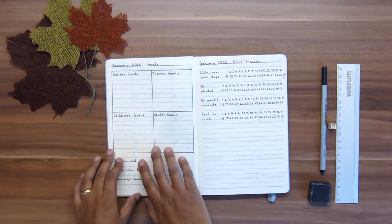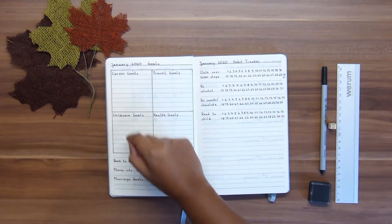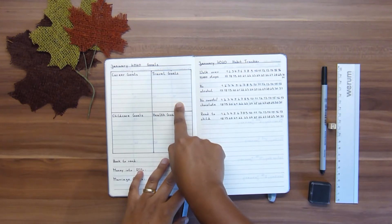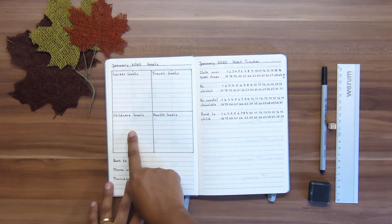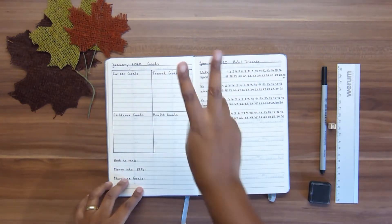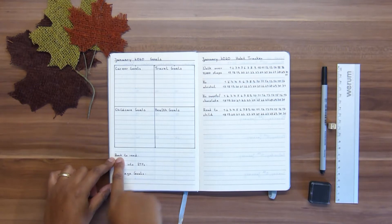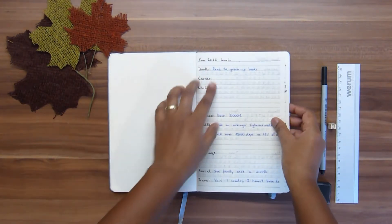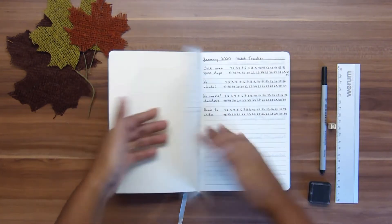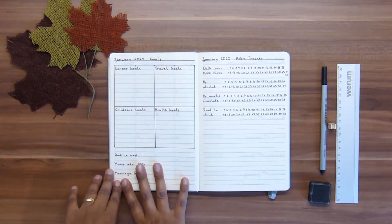On the left side I have my goals. I have four main categories: career goals for my day job, travel goals which also includes this YouTube channel for my travel scrapbooks, childcare goals for my daughter who will turn two years old in 2020, and health goals. Then down here, book to read - I will put down which book I want to read this month because my yearly goal is to read 12 grown-up books, basically one book per month. Then I have the money that I want to save for ETFs and marriage goals.